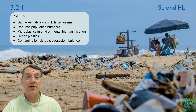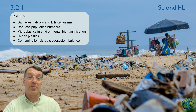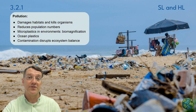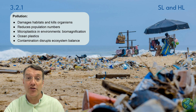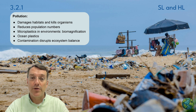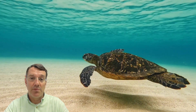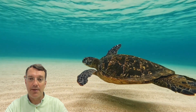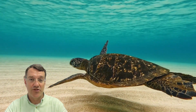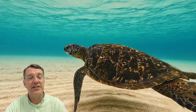Pollution damages habitats and directly harms organisms in numerous ways. Ocean plastic pollution has become particularly problematic, with microplastics now found throughout marine food webs. These tiny plastic fragments attract and concentrate other pollutants, enhancing their toxicity. Through bioaccumulation and biomagnification, these pollutants become more concentrated at higher trophic levels, releasing toxins that damage tissues and disrupt physiological functions, ultimately reducing biodiversity.